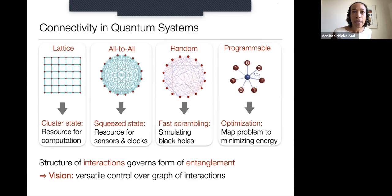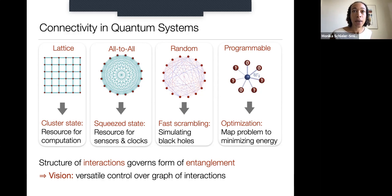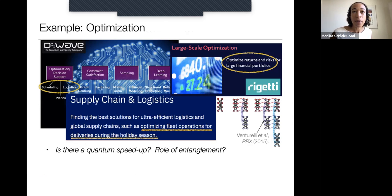Much of what I'll discuss today concerns how we can control and engineer non-local connectivity, which is ultimately a resource for advancing the range of entangled states one can make. Before going into how we do this in the lab, I'll give one more example of why controlling the structure of interactions matters — from the area of optimization.